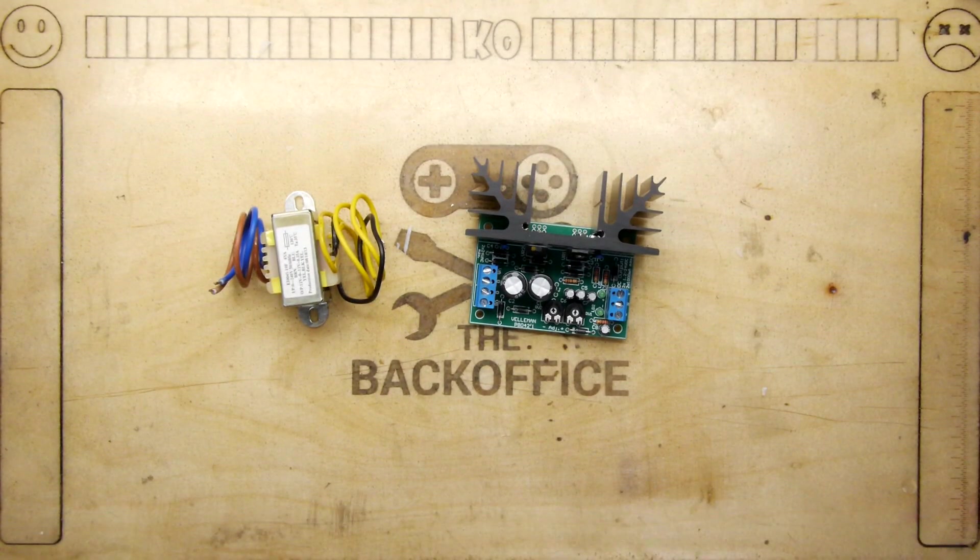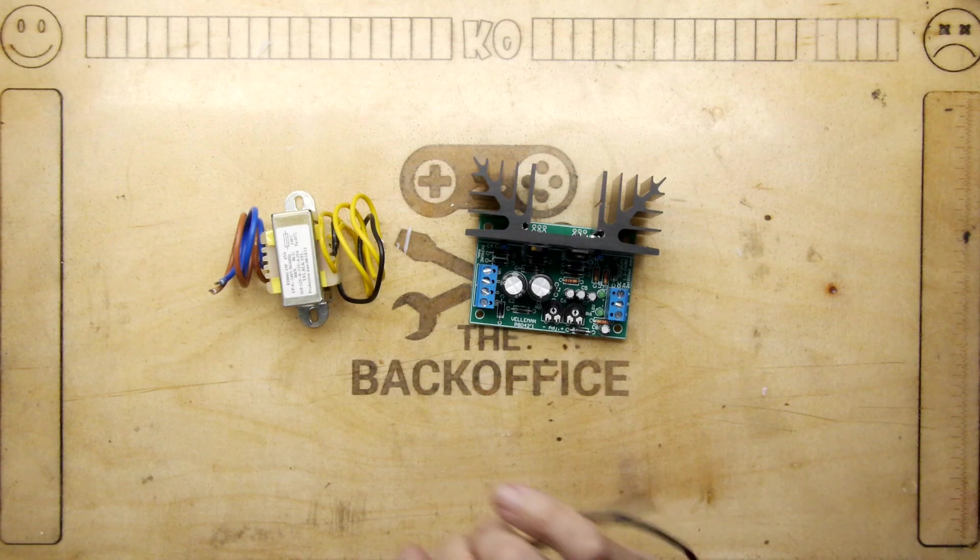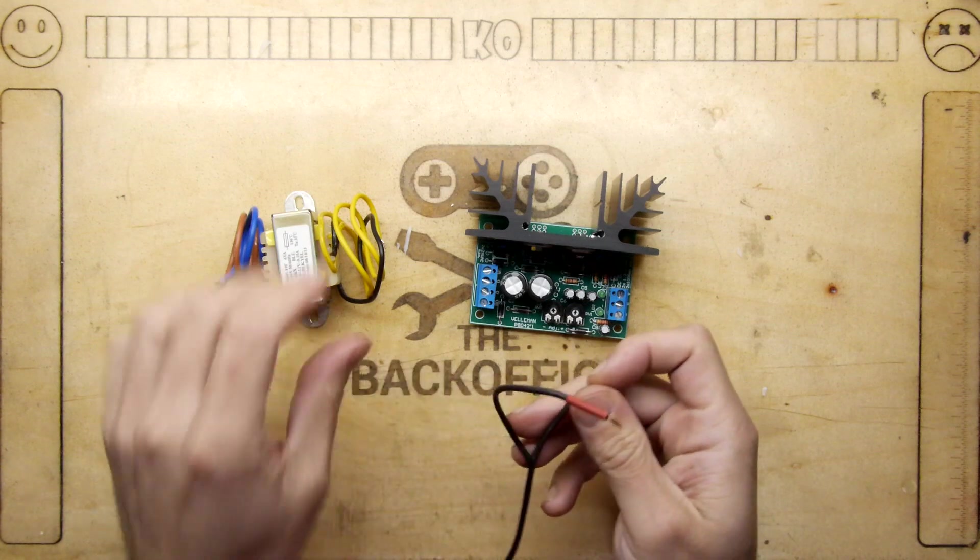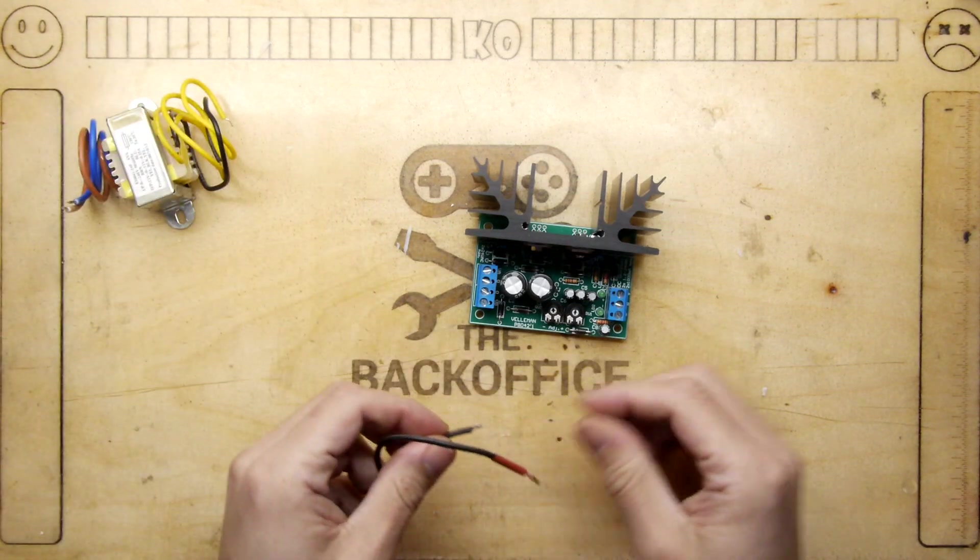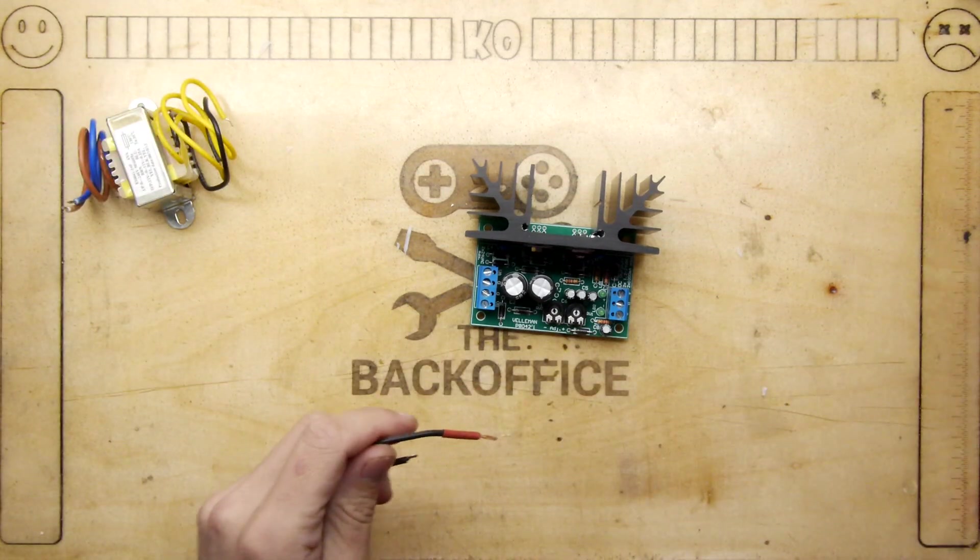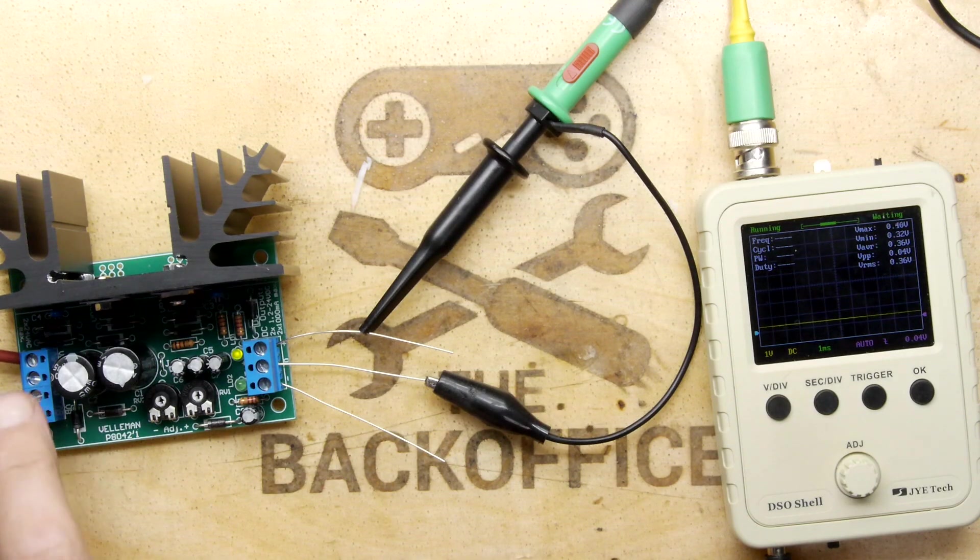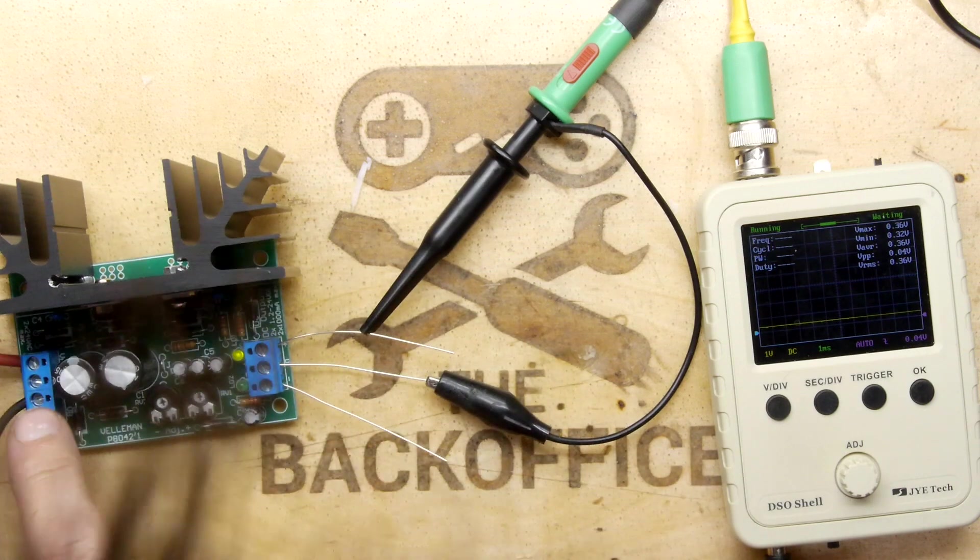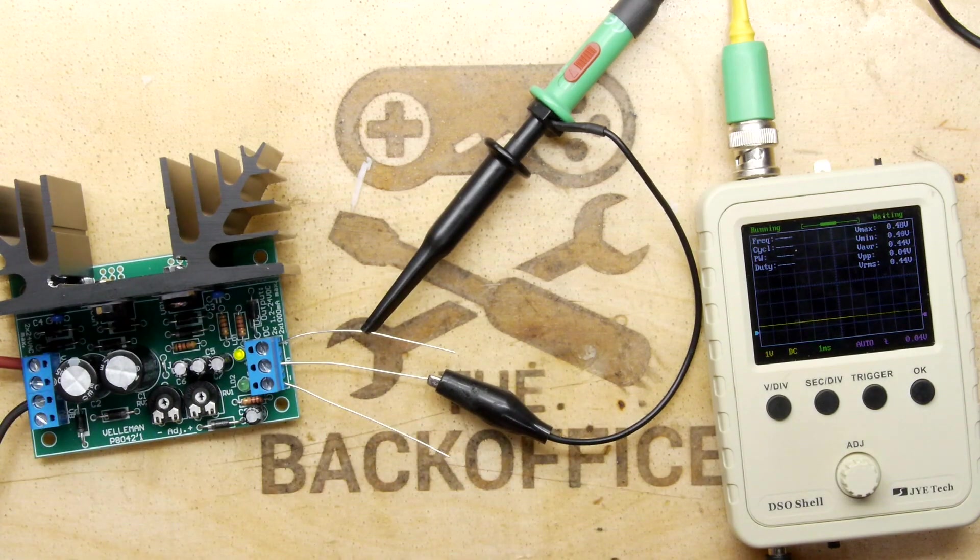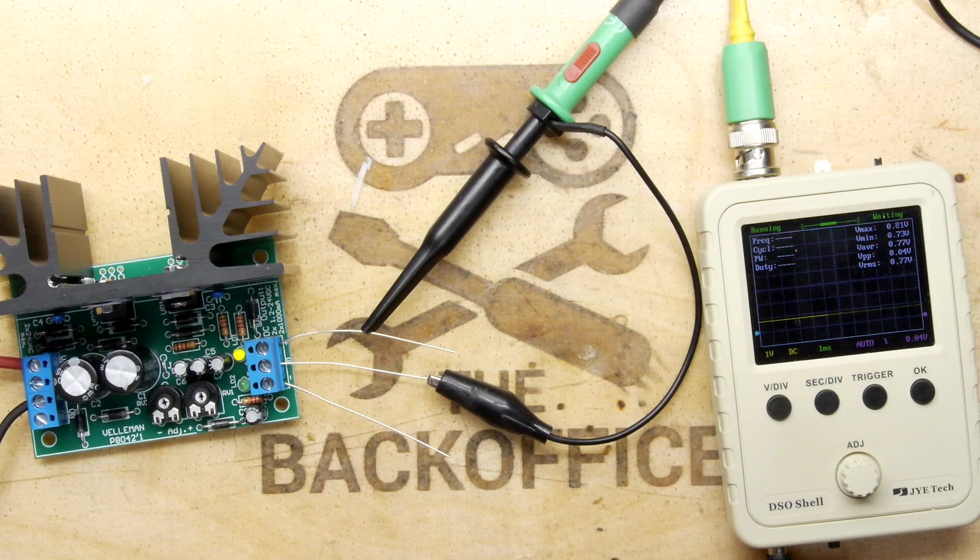So first things first, I believe a good test for this would be to inject some voltage into it—DC voltage—and then make sure we have some DC coming out of it. Huzzah! Right, we have five volts going in here, which I'm going to turn up actually, so I'm going to crank that up to let's say 10 volts.